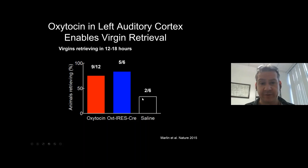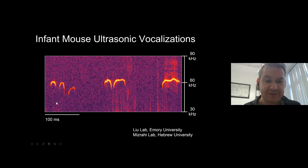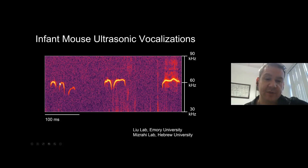What is oxytocin actually doing physiologically in left A1? First, how does auditory cortex respond to pup call sounds? Here's one example of a pup call fragment — 500 milliseconds of time. The frequency or pitch of the sound is on the y-axis. Pup calls tend to be in the high ultrasound range, emitted at this characteristic five-hertz bout rate — about 200 milliseconds between each whistle.